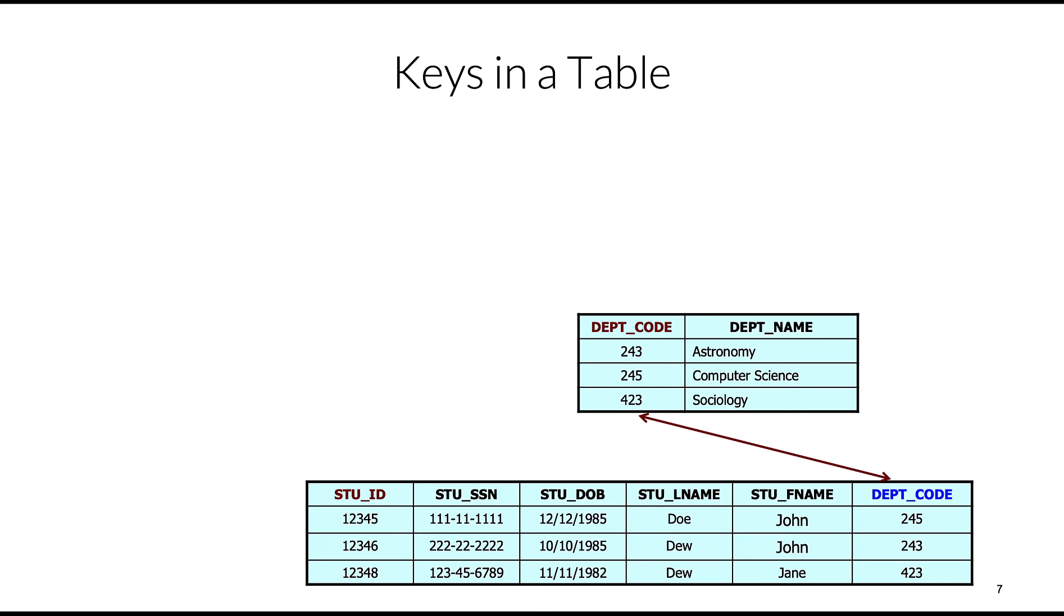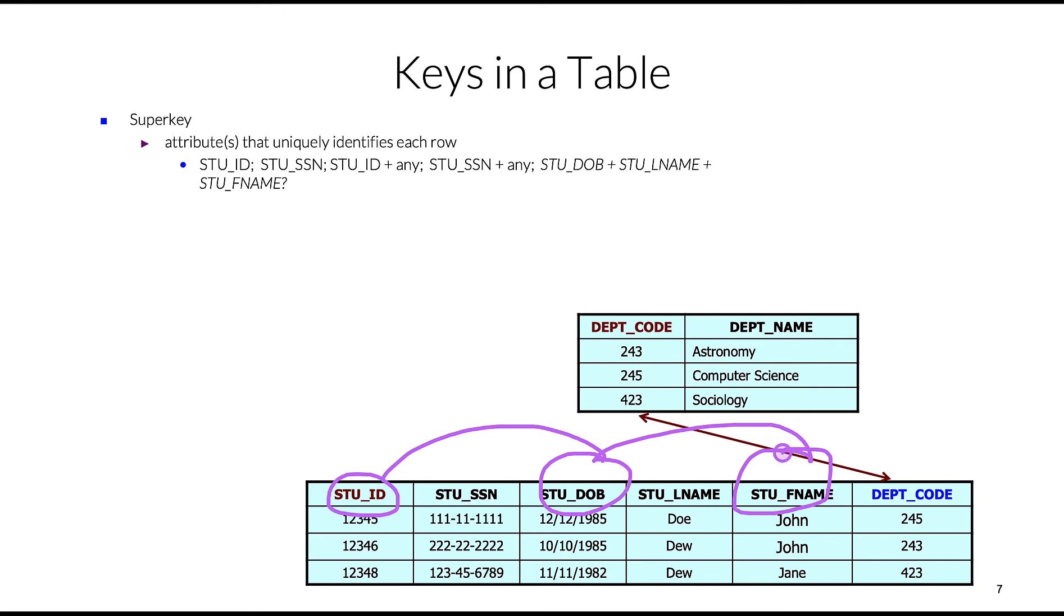Here's another example of key usage in a table. Let's look at super keys. These are attributes that uniquely identify tuples. As a super key, we can select student ID, student social security number, or we can select a combination - student ID and any other attributes. These are super keys.